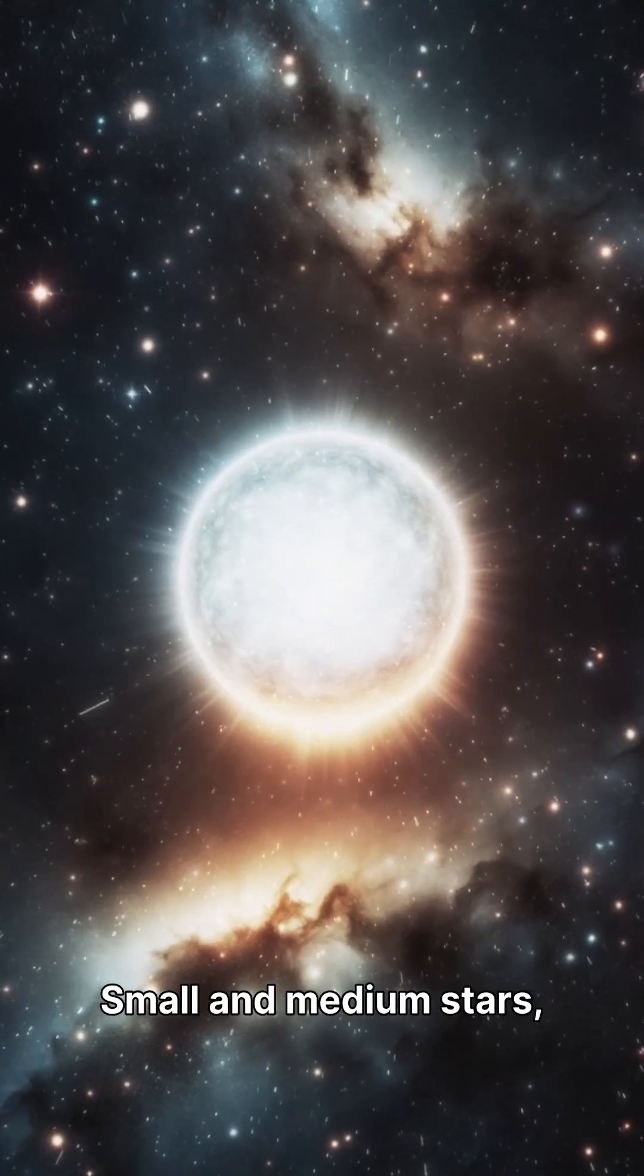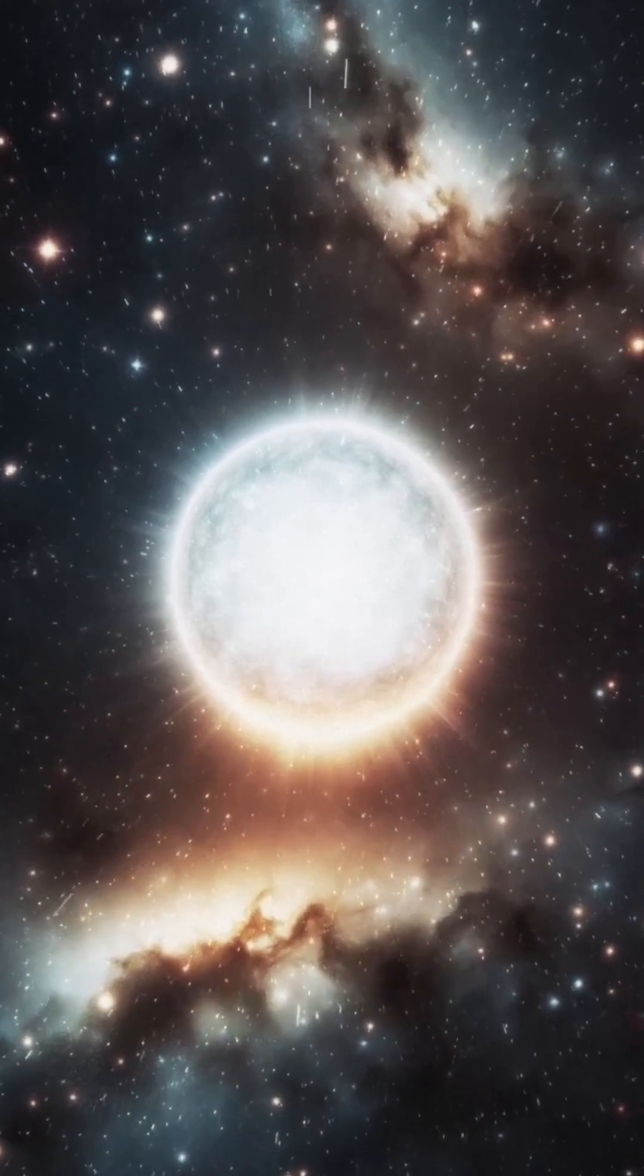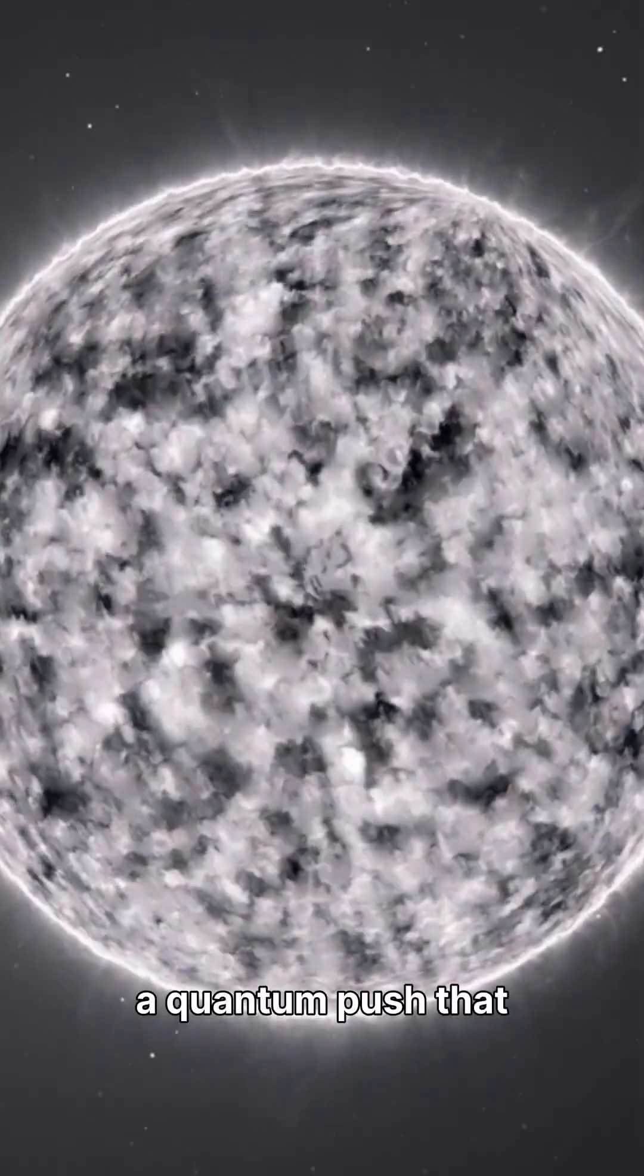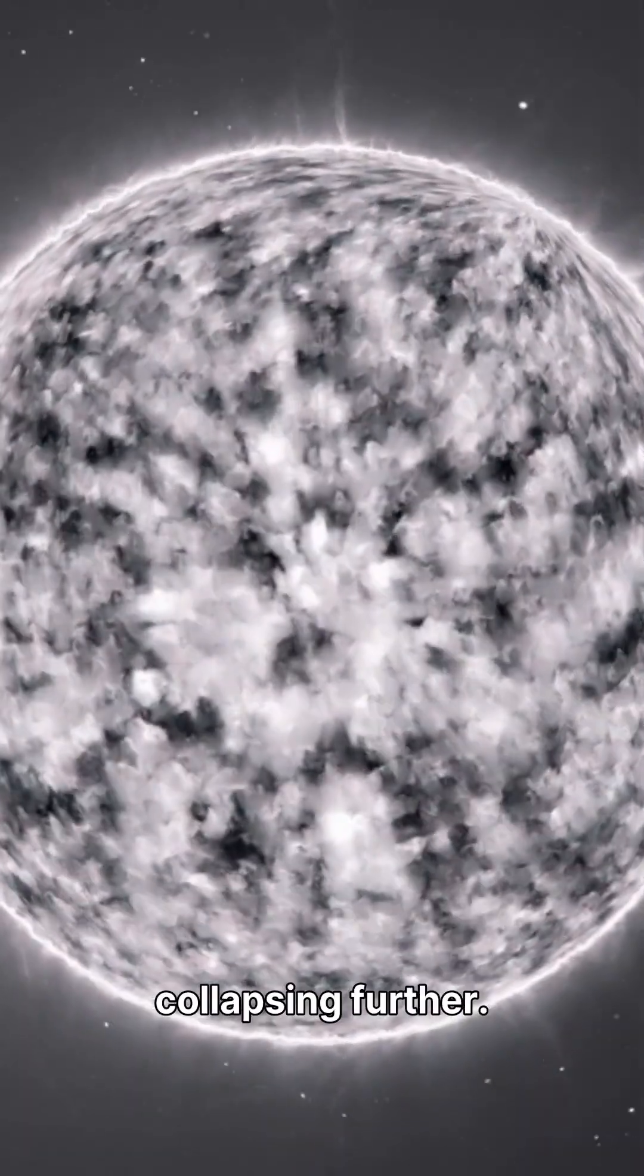Small and medium stars, like our sun, form white dwarfs. Gravity is stopped by electron degeneracy pressure, a quantum push that keeps the star from collapsing further.